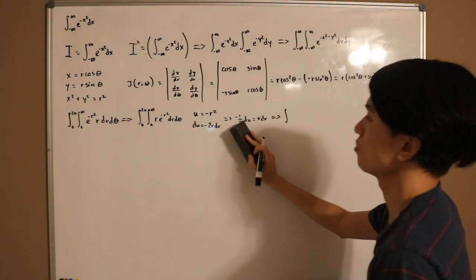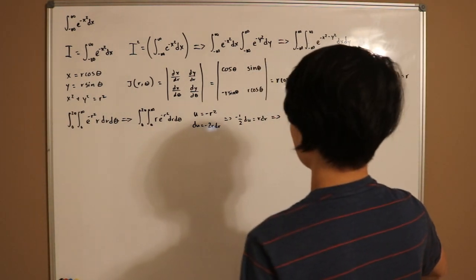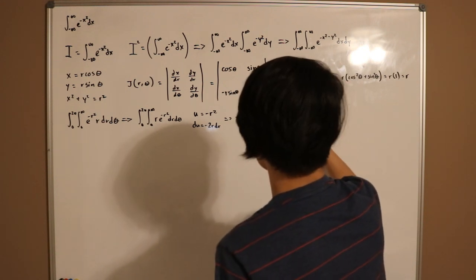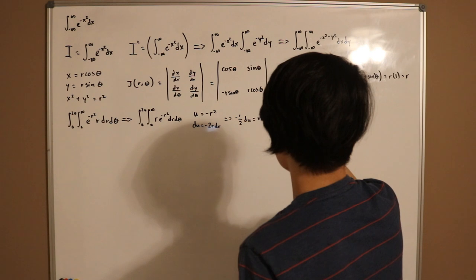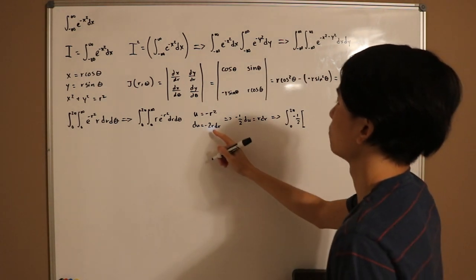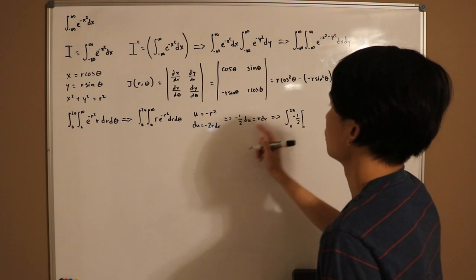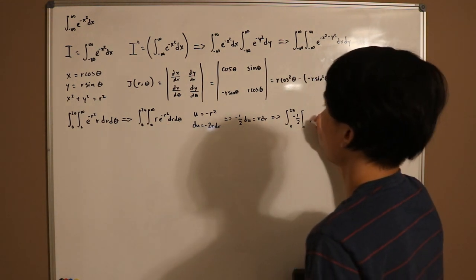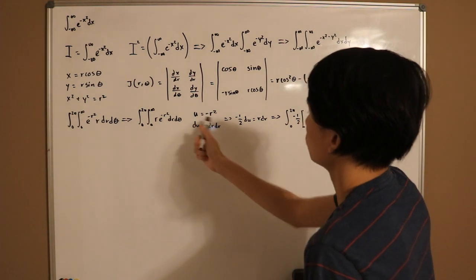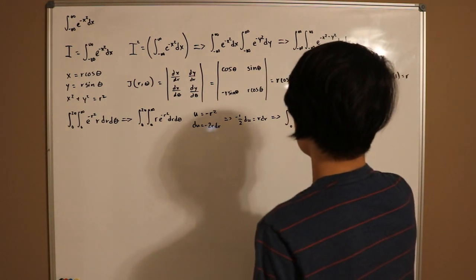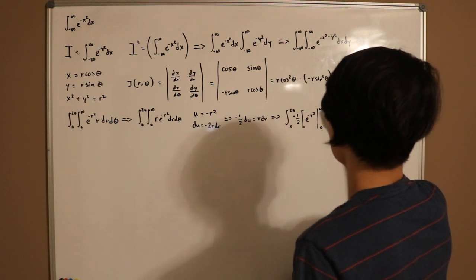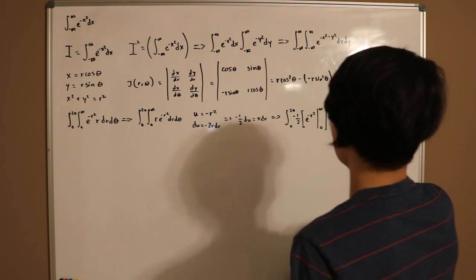So because we have negative 1 half, I'm actually just gonna put the negative 1 half after this integral here. So zero to two pi, negative 1 half, and then you put a bracket and we have that r dr cancels out. So we're just left with e to the negative u. And then you just replace that. You put the u back with negative r squared. So it comes to e to the negative r squared from bounds between zero to infinity and then d theta.